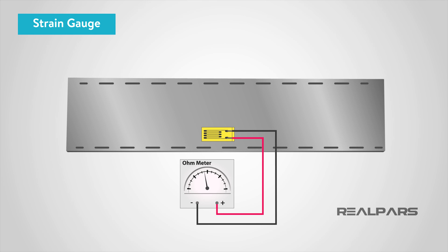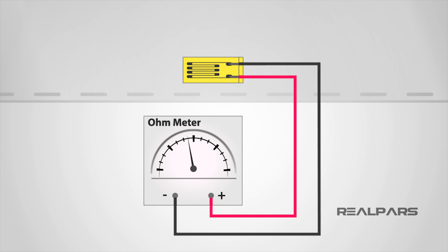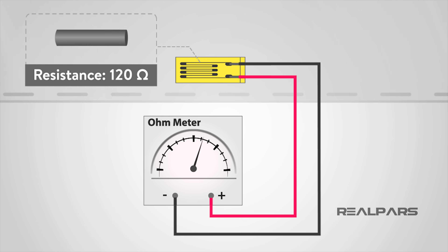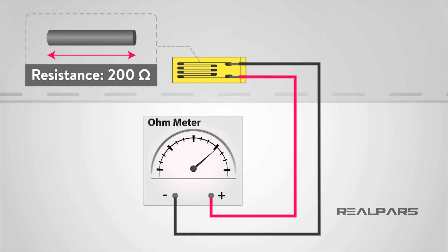When external forces are applied to a stationary object, stress and strain are the results. When there is a strain applied to any metallic wire, the length of that wire increases and the diameter decreases. This increase in length and decrease in diameter will change the resistance of the wire, which will give us our measurement of strain on our machine component.